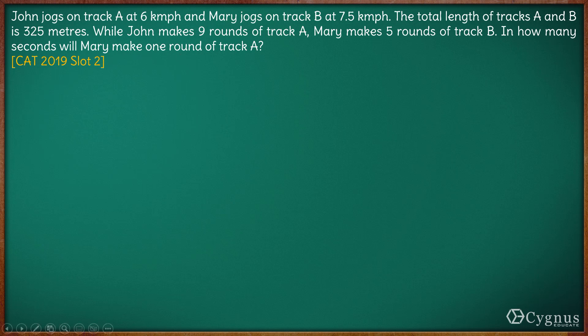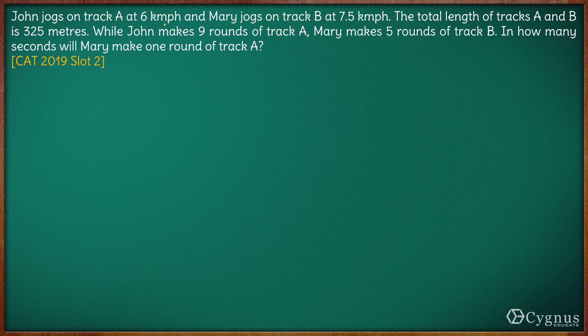Hi, so in this question we have John jogging on track A at 6 kilometers per hour and Mary jogging on track B. We have track A and track B, with John here and Mary over here.